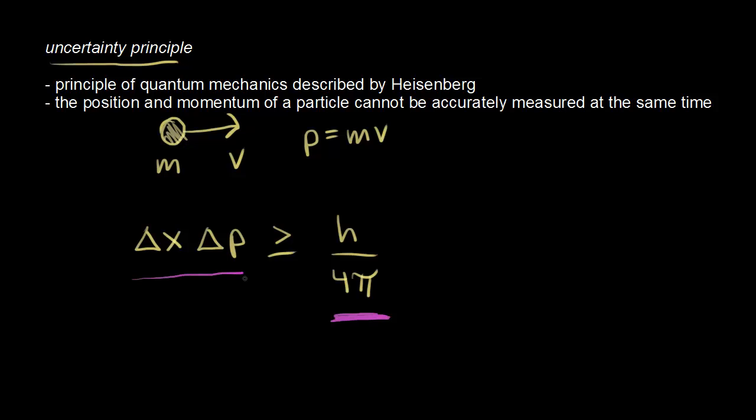If you increase one uncertainty, you decrease the other. Let's go ahead and use some really simple numbers here so you can understand that point.